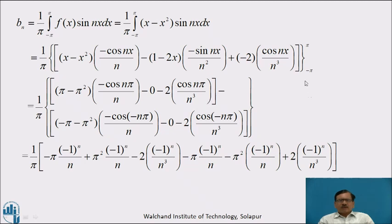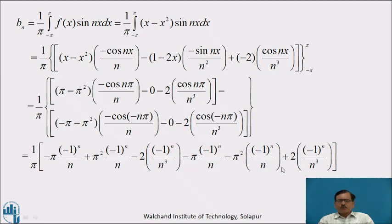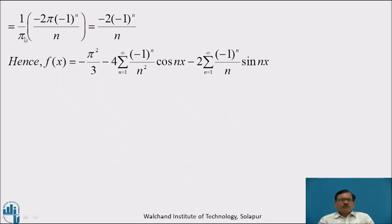Subtracting the lower limit with x equal to minus pi: we get minus pi minus pi square into minus cos(−nπ) by n, and sin(−nπ) is 0, minus 2 cos(−nπ) by n cube. Simplifying and using cos(nπ) equal to (−1)ⁿ, we get bₙ equal to 1 by π times minus 2π times (−1)ⁿ by n, which simplifies to bₙ equal to minus 2 times (−1)ⁿ by n.